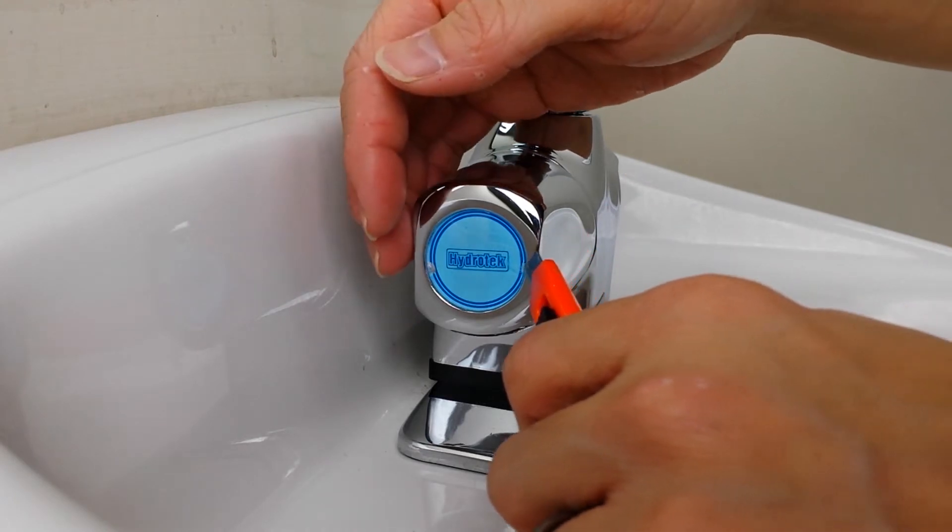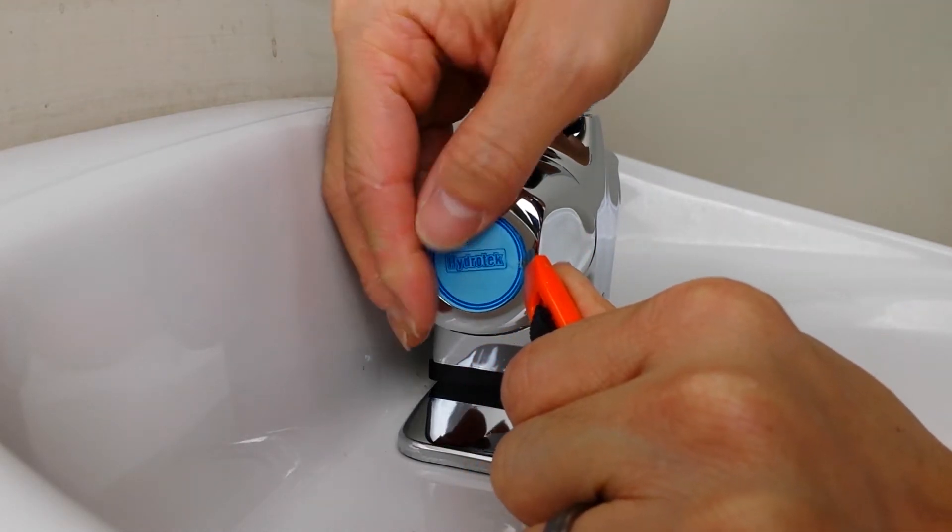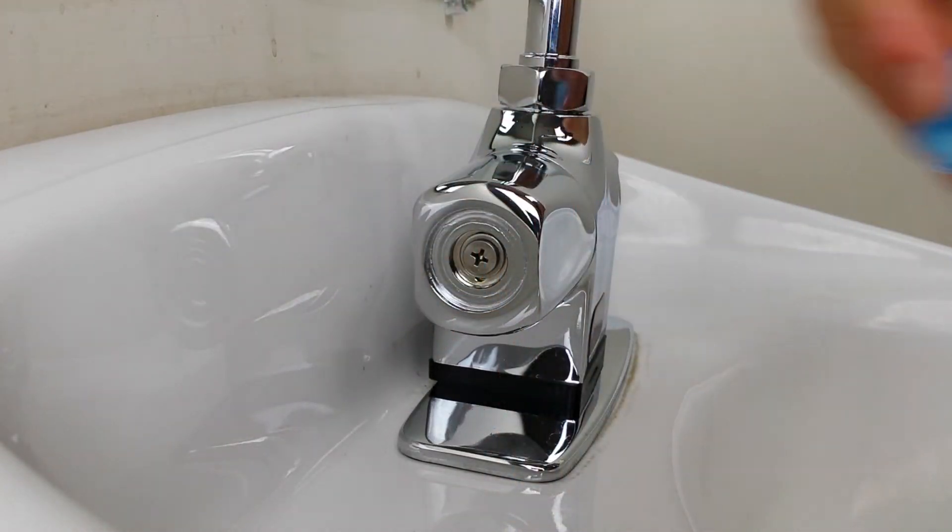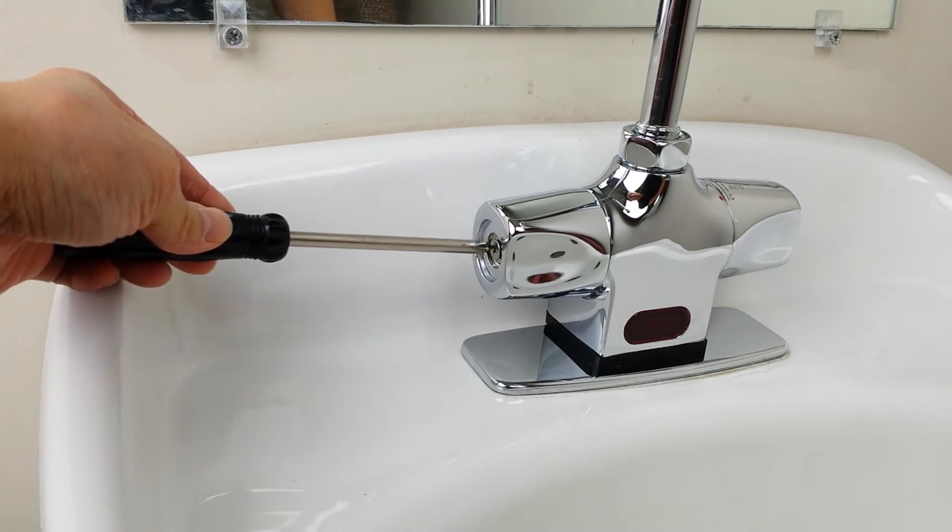Next, remove the solenoid cover piece by prying off the side mark with a thin bladed flathead screwdriver or knife. This will reveal a phillips head screw. Remove the screw and then remove the cover.